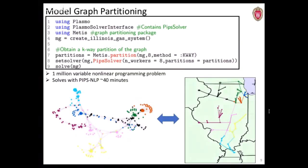We really wanted to make modeling and applying a decomposition algorithm as straightforward as possible. You use Plasma with the solver interface for the PIP solver. You create the Illinois gas system, then use Metis — a traditional graph partitioning package — to partition the model graph into eight partitions with a K-way partition. You pass those partitions to PipsNLP and the algorithm does its parallel implementation. Here's the actual partition of the Illinois gas network problem — an optimal gas dispatch problem with about a million variable nonlinear program, which PipsNLP can solve in roughly 40 minutes.